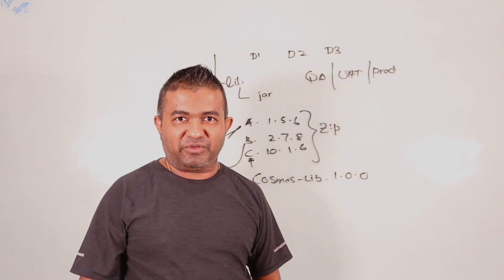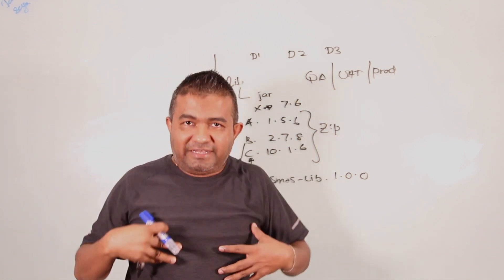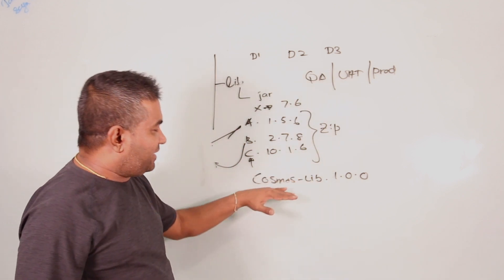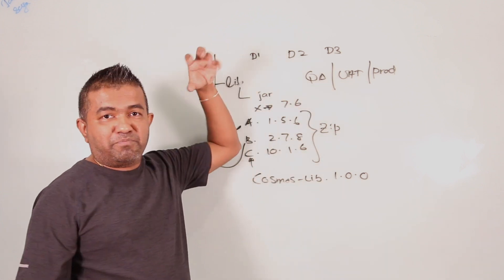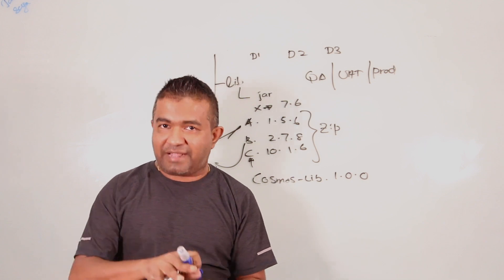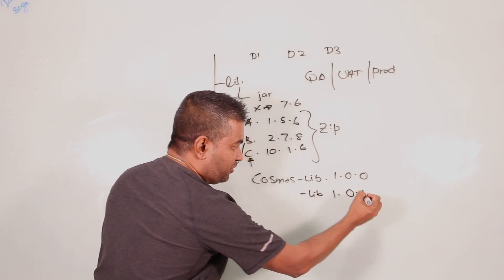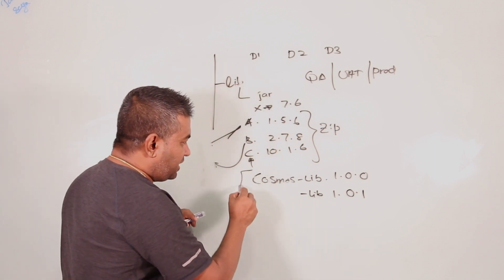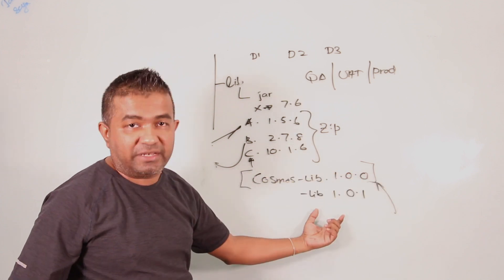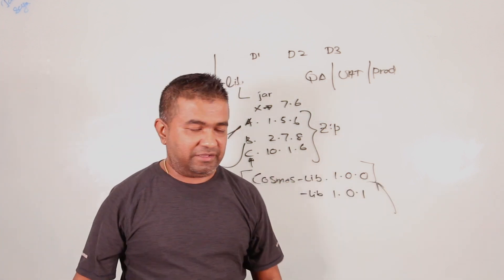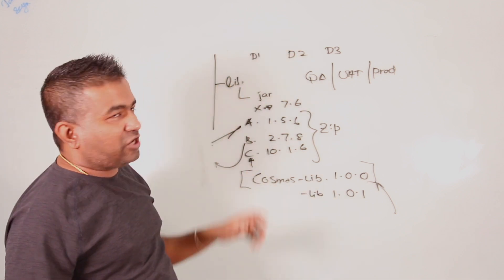If someone uses a different version, it will break at compile time, so you catch it early. After a month, if you need a new jar — say x.jar version 7.6 — you take cosmos-lib 1.0.0, add x.jar 7.6, run the vulnerability scan again, verify no libraries are crashing each other, then bundle it as cosmos-lib version 1.0.1. Now every developer is supposed to use this new bundle.